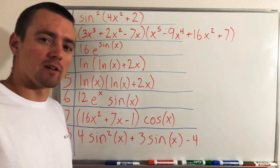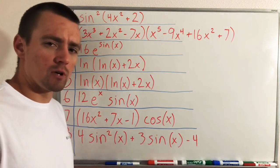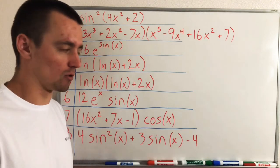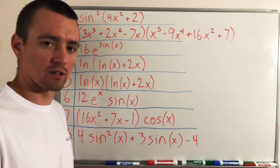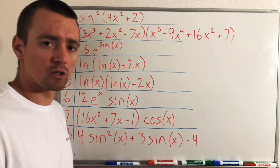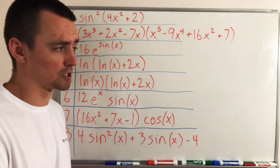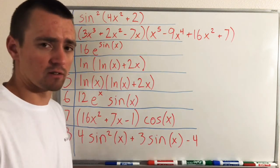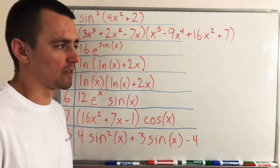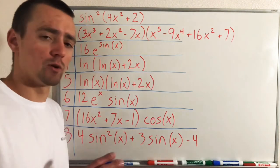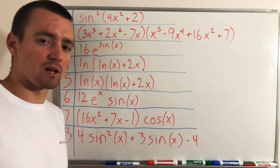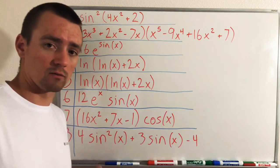Hey guys, Jake here coming at you with another math lesson today. What we're going to be going over is when you use the product rule versus the chain rule — basically, looking at a function that you need to take the derivative of and how you come to the decision of which method to use. We're specifically going over product rule versus chain rule, and between those two and quotient rule, those three methods account for a lot of the derivatives you'd need to know how to find.